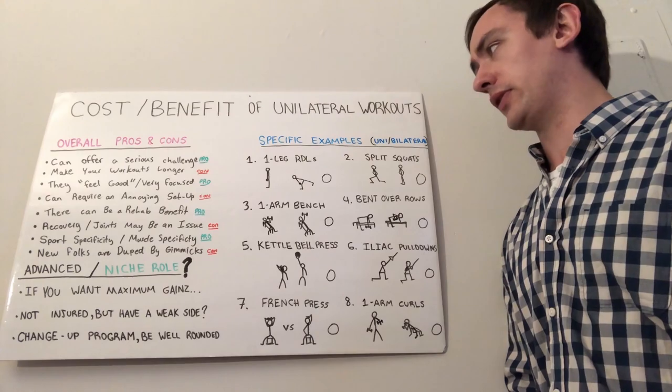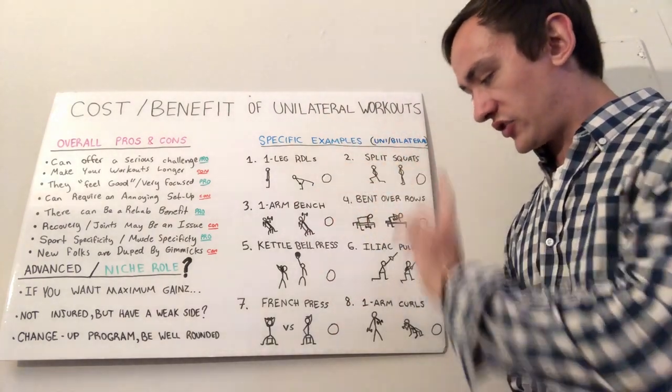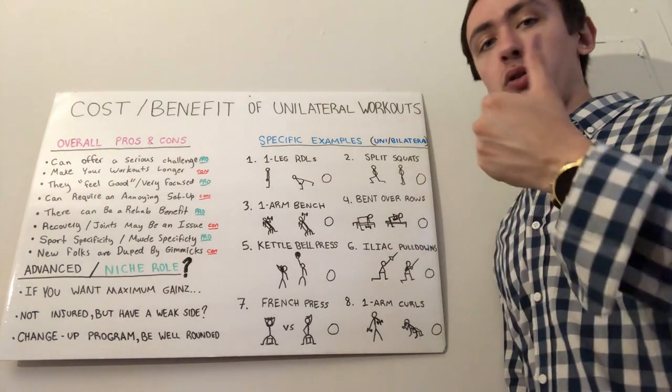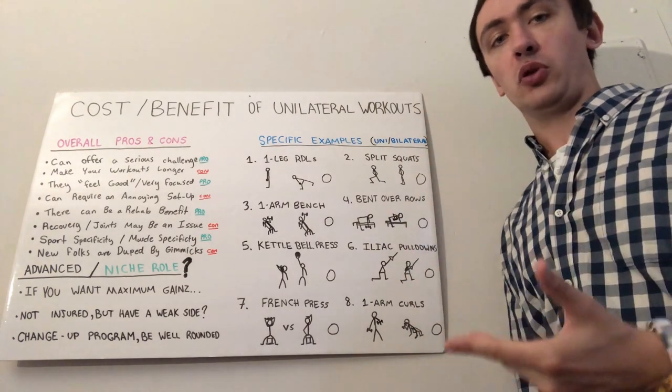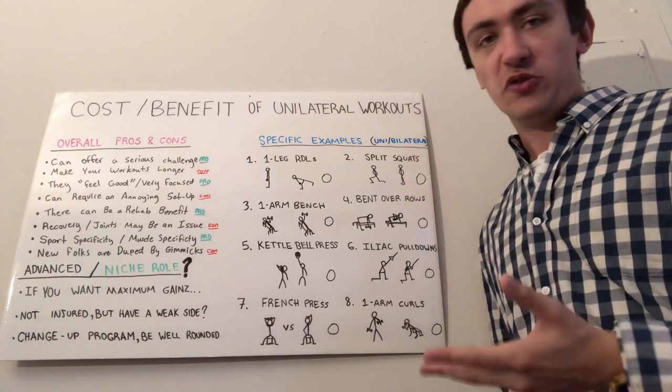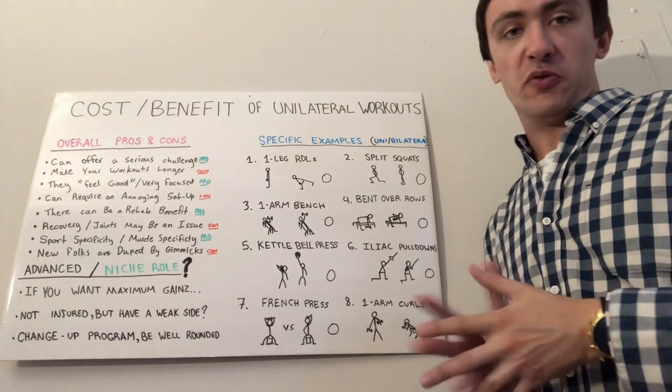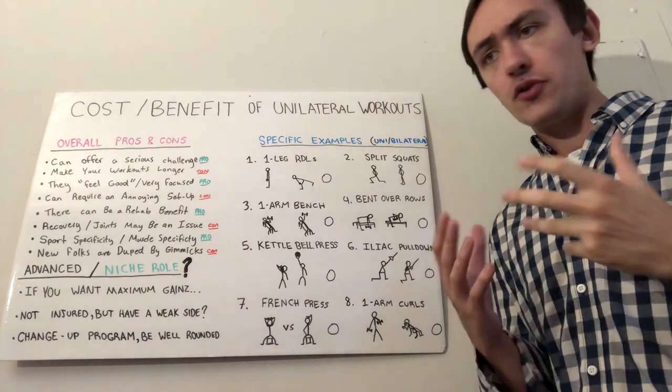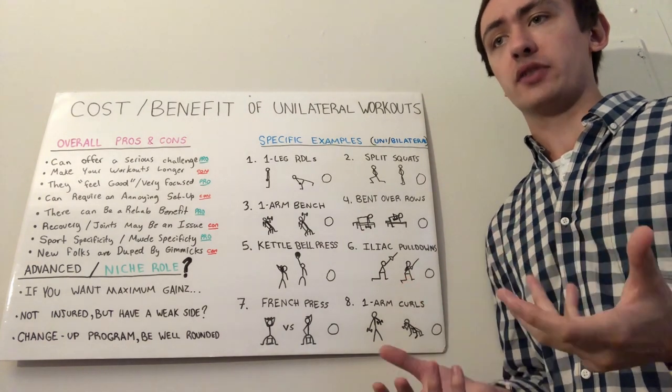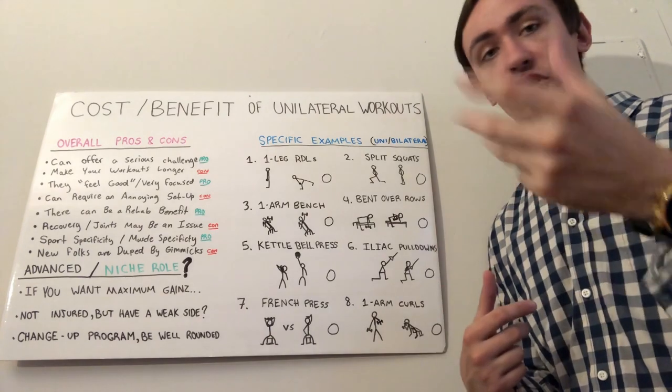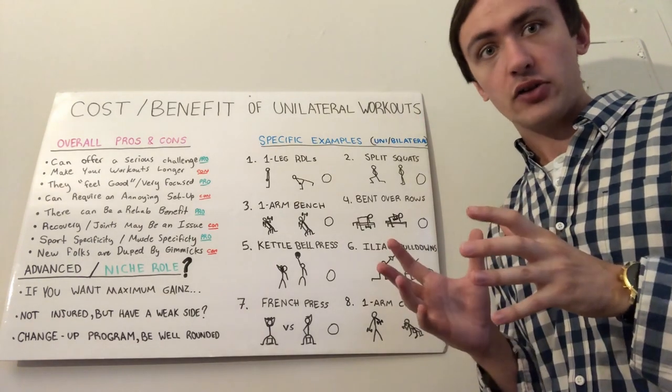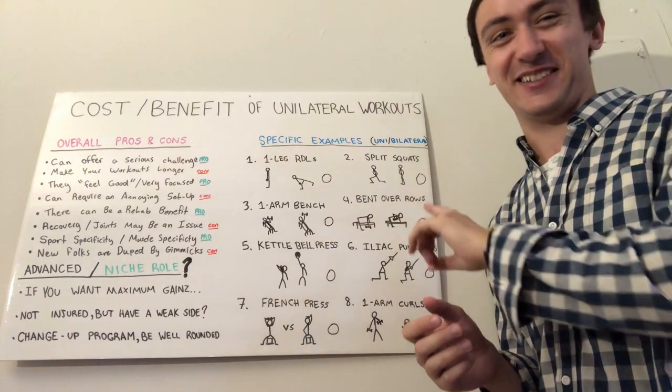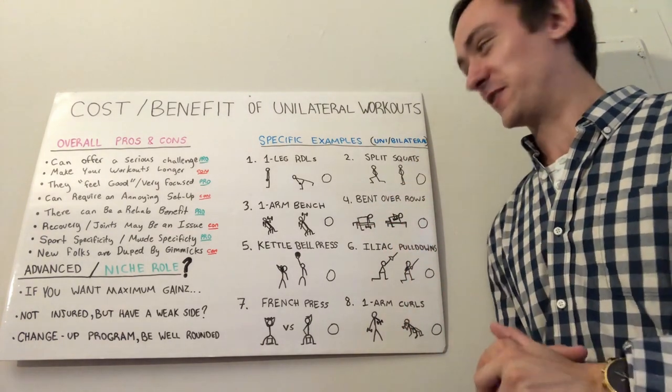Now let's look at some specific examples. The first six fall within the basic six movement patterns: vertical pull, vertical press, horizontal pull, horizontal press, squat movement pattern, and the hip hinge movement pattern. And then the last two is going to be a tricep and bicep isolation.